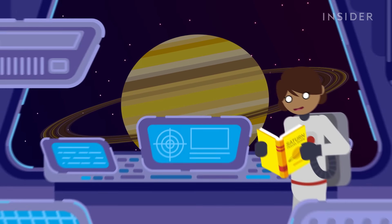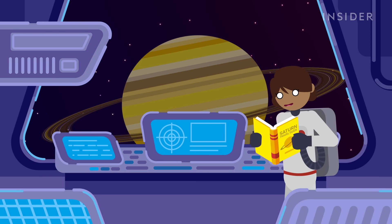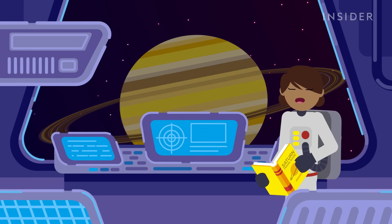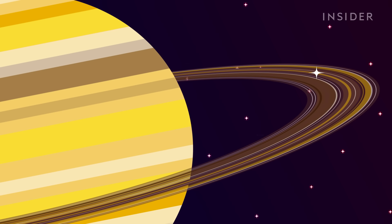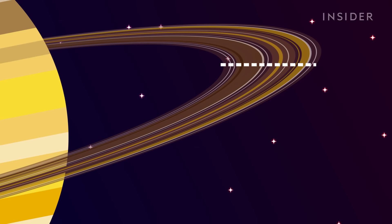But hold up. We can't visit Saturn and skip over the best part, its iconic rings. Saturn's rings are almost as wide as the distance between the Earth and the Moon. So at first glance, they seem like an easy place to land and explore on foot.